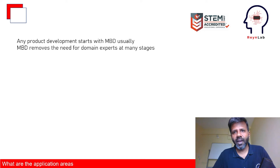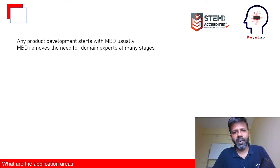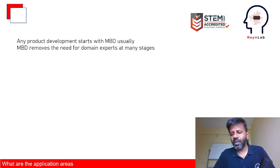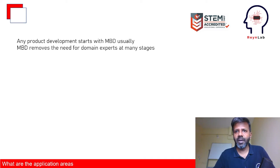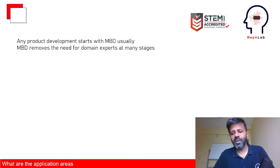Take any car — a Mercedes-Benz S-Class — you can't name a single component that doesn't need electronics to run. An automobile, which is in the automotive domain, requires mechanical engineers, automotive engineers, electronics engineers, and complex control systems experts from the CS/IT side. Model-based development removes the need for domain experts at many stages — a mechanical engineer can develop a control system, rapidly prototype a vehicle ECU, and test it without depending on an electronics or computer science engineer.